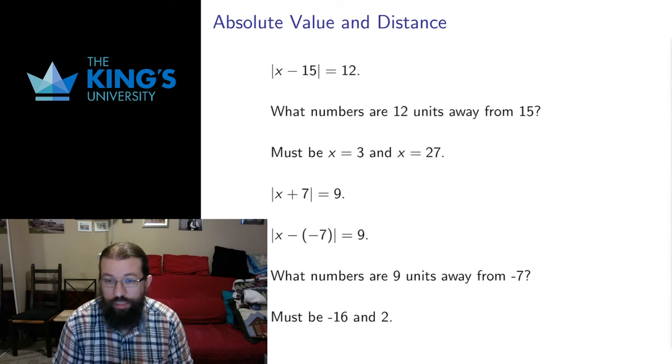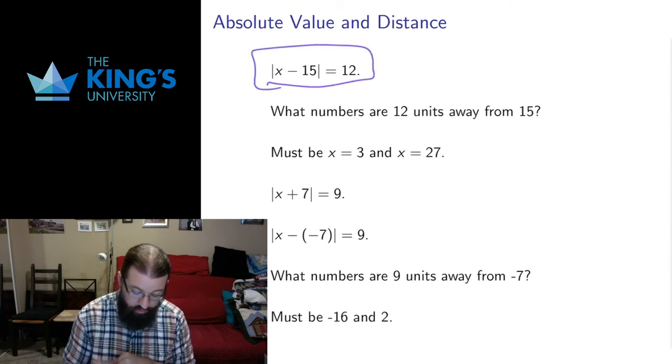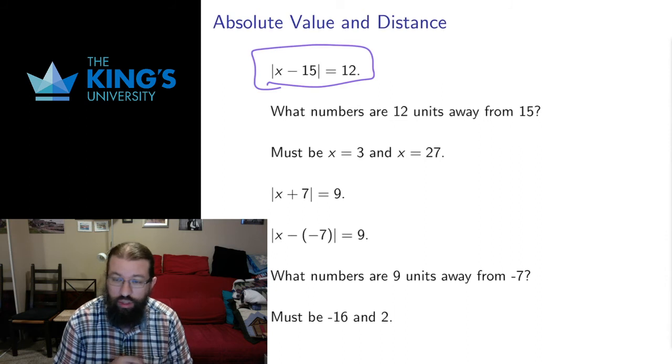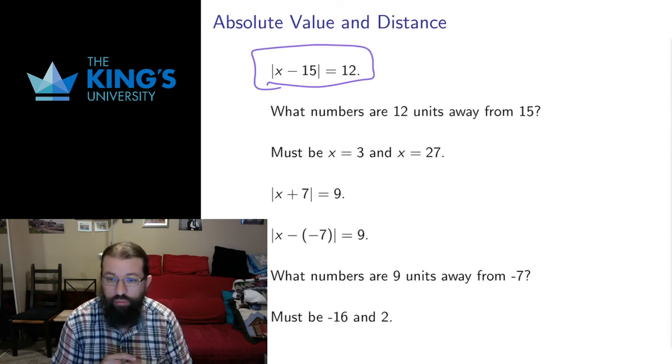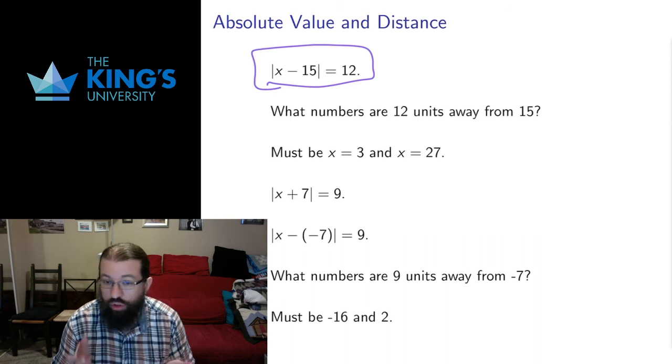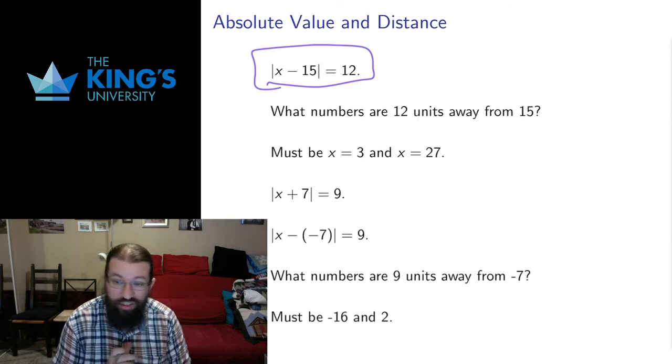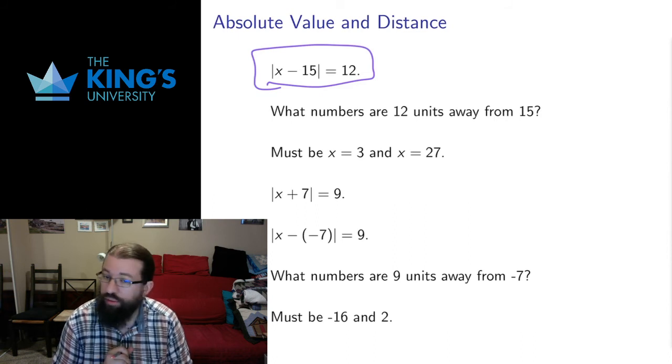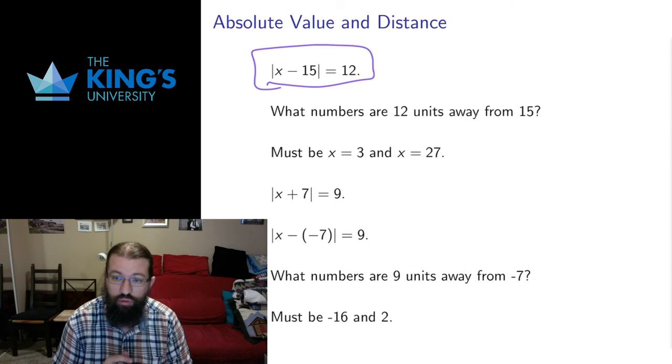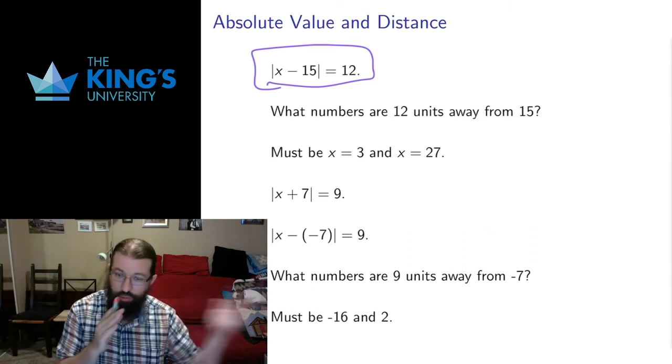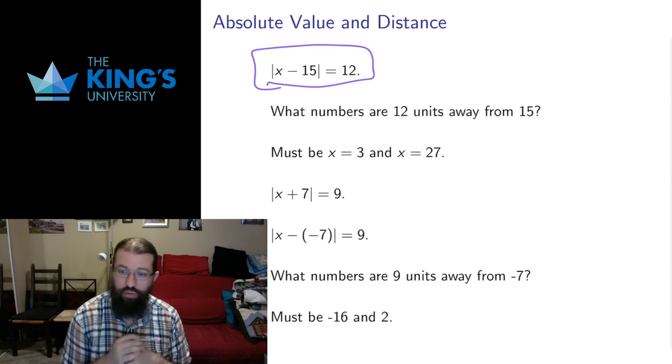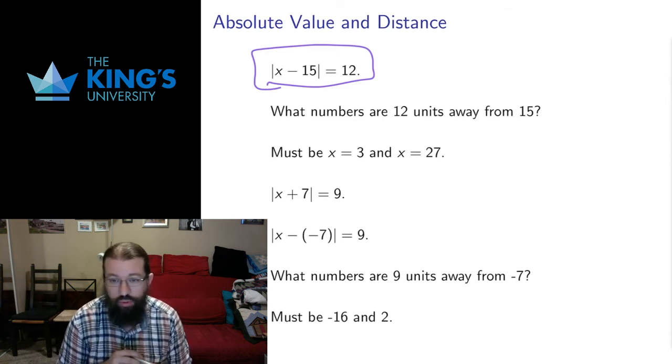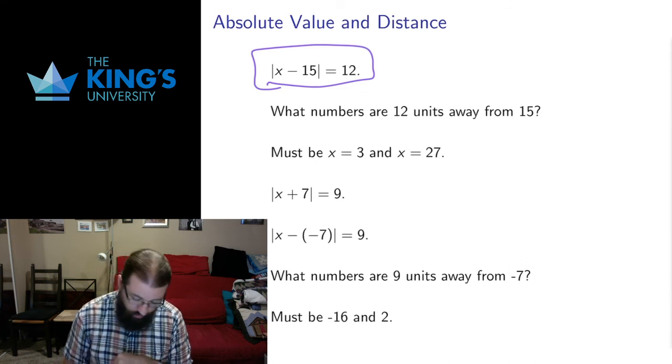Let me do a couple more examples to make this clear. This equation says the distance from x to 15 is 12. So what numbers are 12 units away from 15? Well, 15 minus 12 is down at 3. 15 plus 12 is up at 27. So the answers to this, which I could solve by my two cases, I can directly observe by knowing that absolute value means distance when there's subtraction between it, and say that x equals 3 and x equals 27 are the two numbers that are 12 units away from 15, 12 to one side and 12 to the other.